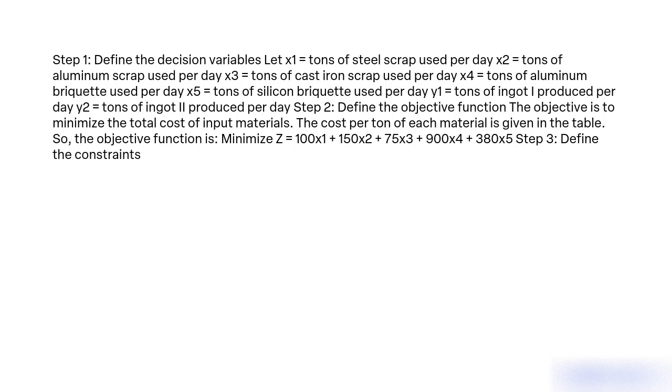Y1 = tons of ingot I produced per day, Y2 = tons of ingot II produced per day. Step 2: Define the objective function. The objective is to minimize the total cost of input materials. The cost per ton of each material is given in the table. So, the objective function is: Minimize Z = 100X1 + 150X2 + 75X3 + 900X4 + 300X5. Step 3: Define the constraints.